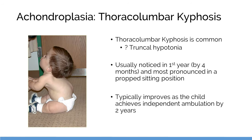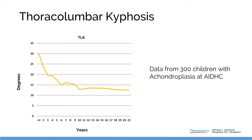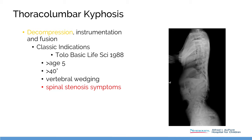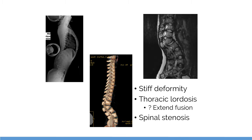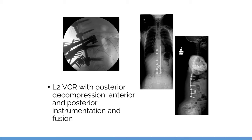Thoracolumbar kyphosis is seen early in life in achondroplasia. Our data shows dramatic improvement in thoracolumbar kyphosis over time. Dr. Tolo's indications were greater than age five with greater than 40 degrees and significant wedging, but I actually wait until they're symptomatic with spinal stenosis or discomfort. Here's an example of a child who got worse from age 10 to 16, developed significant spinal stenosis with lordosis in the thoracic spine, and I did a posterior approach VCR with instrumentation and fusion, achieving a good result.